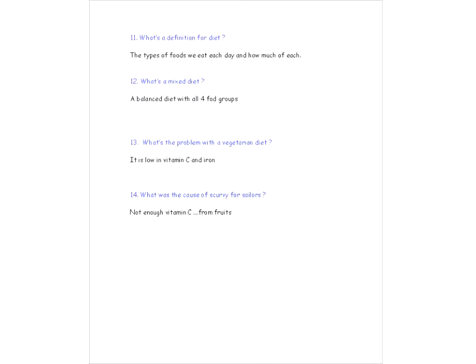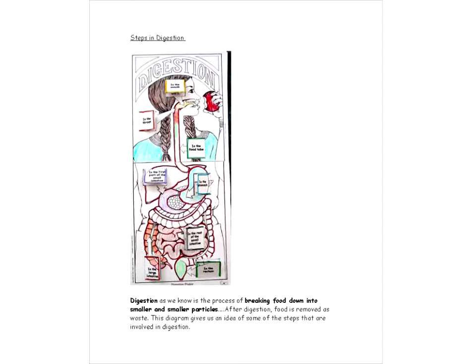Okay, so again let's go over a few review questions. What's the definition for diet? The types of food we eat each day and how much of each. What's a mixed diet? It's a balanced diet with all four food groups. What's the problem with the vegetarian diet? It's low in vitamin C and iron. And what's the cause of scurvy for sailors? Not enough vitamin C from fruits.